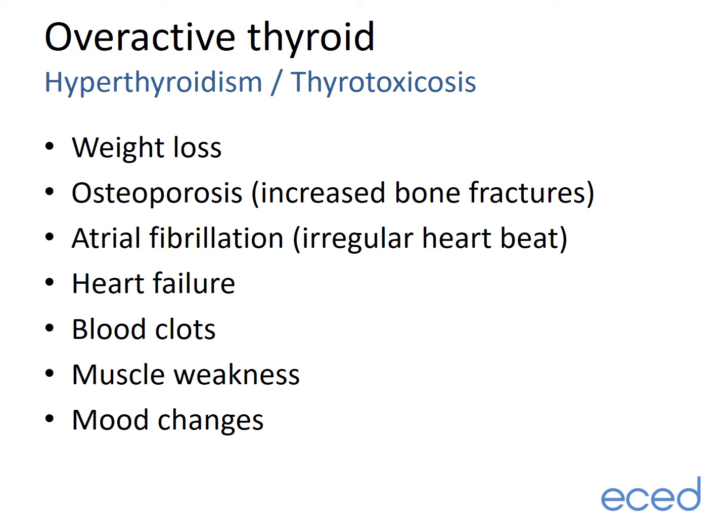Some of the consequences of an overactive thyroid gland include weight loss, often despite increased appetite and food intake, osteoporosis — which is thinning of the bones — which can increase the risk of breaking bones. Overactive thyroid can also increase the risk of an irregular heart rhythm and heart failure, which can cause breathlessness and leg swelling. There is an increased risk of blood clots forming in leg veins, which can travel to the lung and cause severe breathing problems. Excess thyroid hormone also tends to weaken muscle strength. Mood changes are predominantly anxiety and can also result in increased irritability and hyperactivity. Effectively treating overactive thyroid reduces the risk of all these complications substantially.